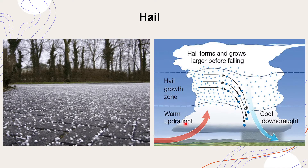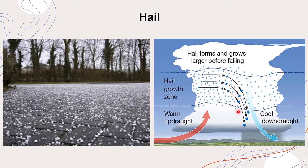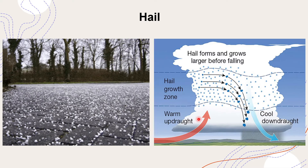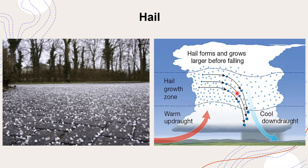Now how does a hailstorm occur? Raindrops formed in the clouds begin to fall as rain. But due to a very heated earth, a warm updraft occurs and this updraft of air current carries all these raindrops to a much higher altitude where they freeze and become crystals of ice.